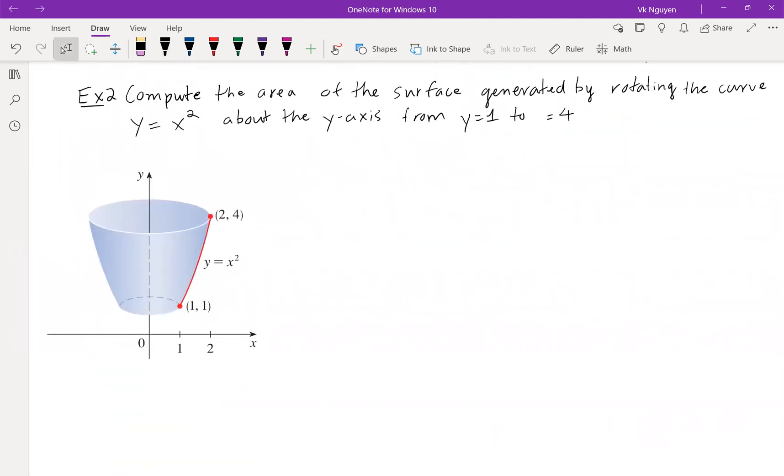Exercise 2: Compute the area of the surface generated by rotating the curve y equals x square about the y axis from y equals 1 to y equals 4. If we sketch our sample first, we will see that the radius is x, and we're going to sum these areas from y equals 1 to y equals 4.